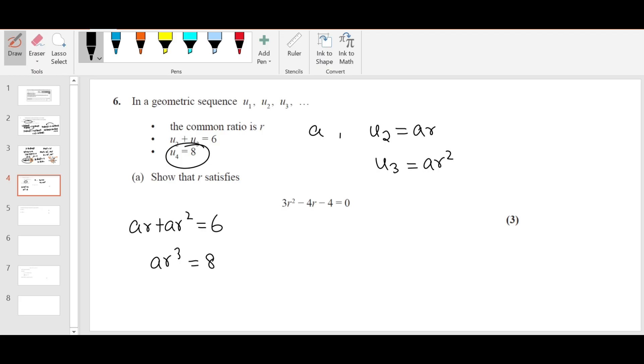And then you can write u4 equals 8 as AR cubed equals 8. I'm going to divide both equations. So you can write it as AR plus AR squared divided by AR cubed equals 6 over 8. Take A as a common factor and cancel it. You can take R also as a common factor and cancel it. You will get 1 plus R divided by R squared equals 3 over 4. When you cross multiply, 4R plus 4 equals 3R squared. Put everything on one side, you get 3R squared minus 4R minus 4 equals 0. That's the required equation.